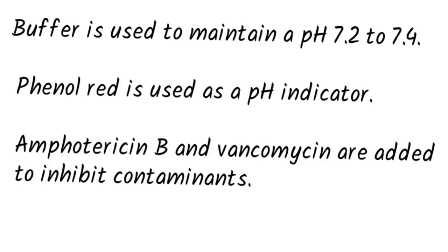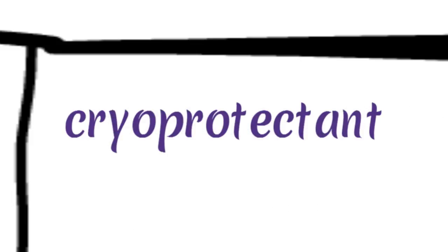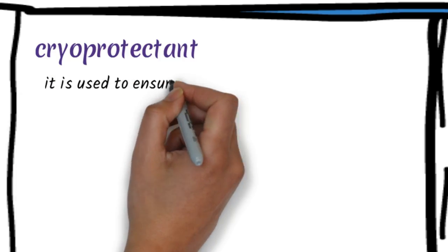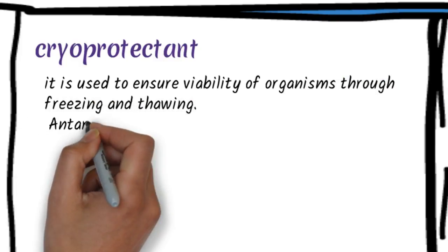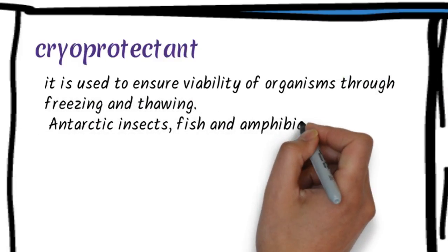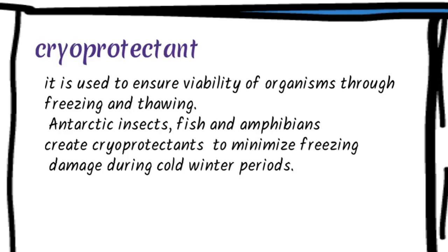Amphotericin B acts as an antifungal and vancomycin as an antibacterial. Now another important thing is the cryoprotectant. It is mainly present in Antarctica insects and fish. They create the cryoprotectant and humans extract that and use it in the medium to ensure the viability of organisms through freezing and thawing.